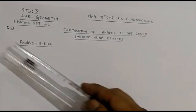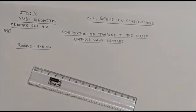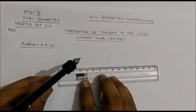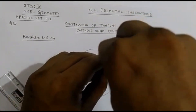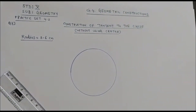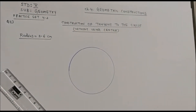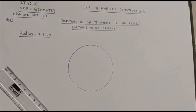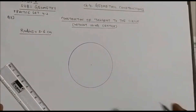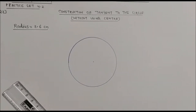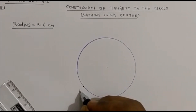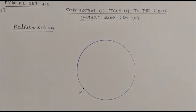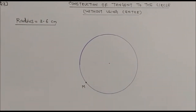Practice Set 4.2, Question 3. The radius of the circle is given as 3.6 cm. We will take the radius as 3.6 cm and draw a circle with that given radius. This is the center of the circle — we can mark this as the center. Now we have to draw a tangent to the circle at any point, so we will take one point here and mark this point as M.